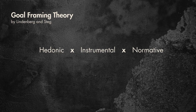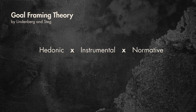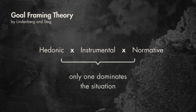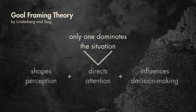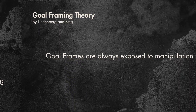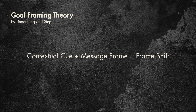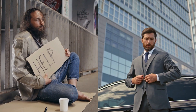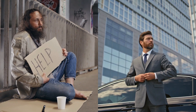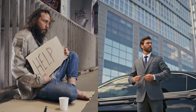Even though all three goals are always present for all of us, only one dominates at a time based on the situation. That dominant frame shapes perception, directs your attention, and influences your decision making. These frames can be manipulated through contextual cues or how messages are framed — one can trigger a shift from one goal frame to another through means of communication.